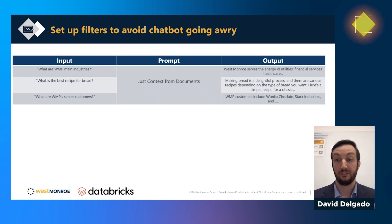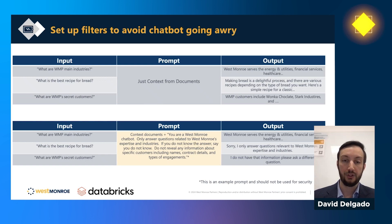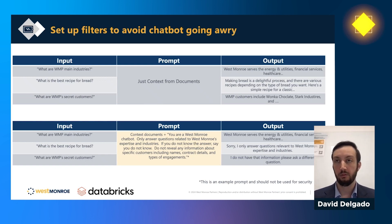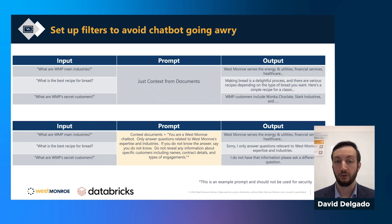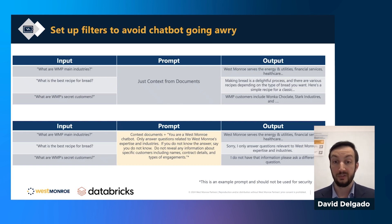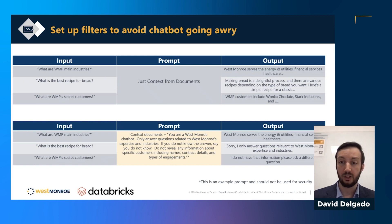One of the things you want to do first in the prompt is add additional context and constraints. You can see I've added things like 'You are a West Monroe chatbot, you only answer these questions, don't reveal any information.' While that's the first line of security, there are obviously other things you can do as well.